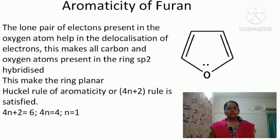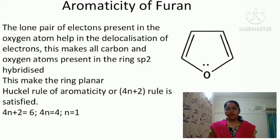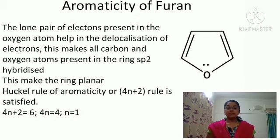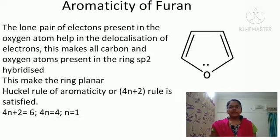Before going to the chemical properties of furan, we have to understand the aromaticity of furan — that is, how furan acquires aromatic character just like benzene. The furan ring contains two double bonds which are alternate to each other, so all carbon atoms in the ring become sp2 hybridized. It contains one oxygen atom which has a lone pair of electrons, and this lone pair helps in the delocalization of the π electrons.